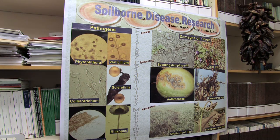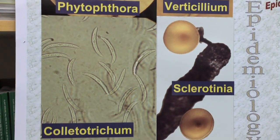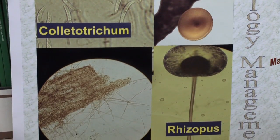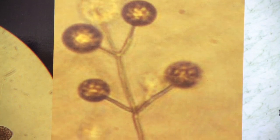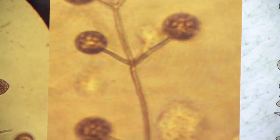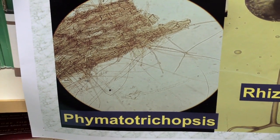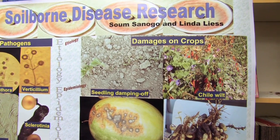On this poster that you are seeing, you can see on the left side some microscopy images of different fungi or organisms that resemble fungi. In this particular one, you see the name Phytophthora. It grows like fungi, but it's not a fungus per se. And some other organisms — from Verticillium to this long name, Phymitotricopsis — they're all fungi that cause soil-borne diseases in different crops.